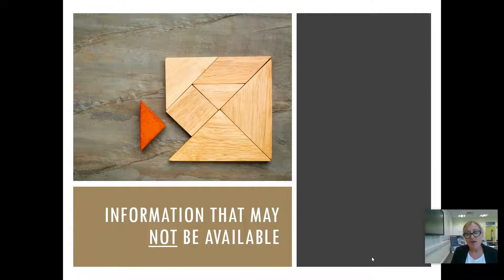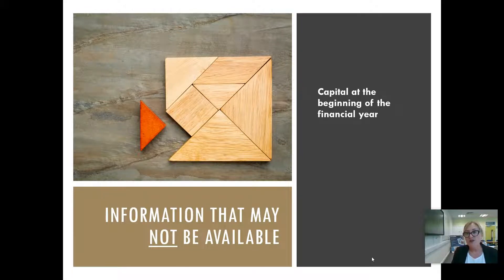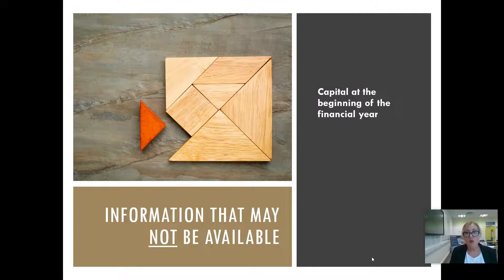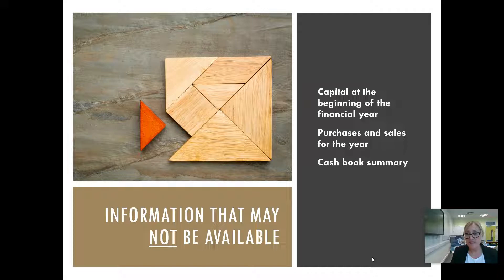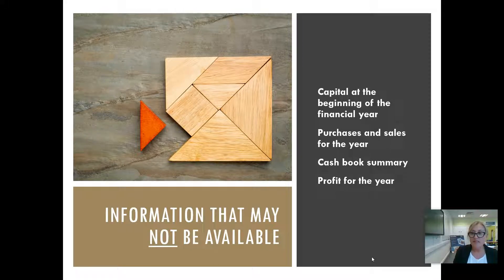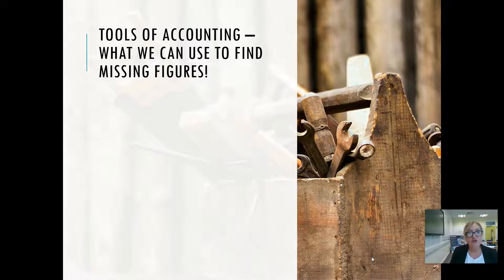Incomplete records is a bit like completing a puzzle — like doing a jigsaw. You have to put in the bits you know and then find the missing pieces. We might not know what the capital is at the beginning of the financial year, but we can use the accounting equation: assets minus liabilities equals capital. If we know the assets and liabilities at the start of the year, we can take one away from the other to find capital. We can work out purchases and sales using a sales or purchase ledger control account, assemble a cash book summary, draw up a bank account or cash account — particularly useful if we're looking for missing cash. We can also work out the profit for the year.